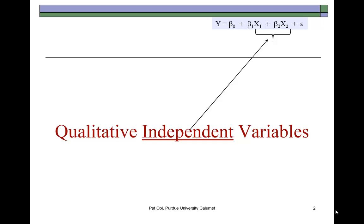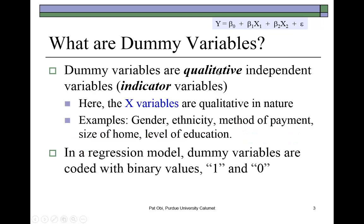In a dummy variable regression, the independent variables are referred to as qualitative variables. So here, X1, X2, X3, and the rest of them are going to be qualitative variables. These qualitative variables are also referred to as indicator variables. While Y, the dependent variable, is a quantitative variable — say, worker productivity measured in outputs per man hours — it is being regressed on one or more independent variables that are qualitative in nature.